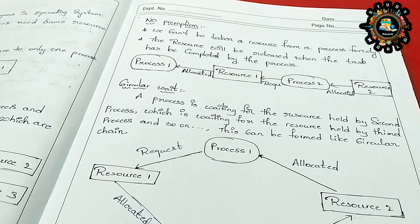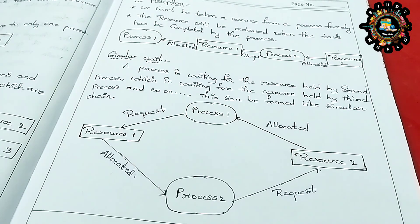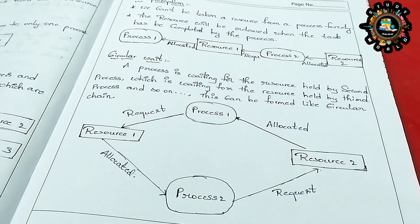The last condition is Circular Wait. A process is waiting for a resource held by the second process. There is a circular chain of processes and resources — each process is waiting for a resource held by the next process in the chain.